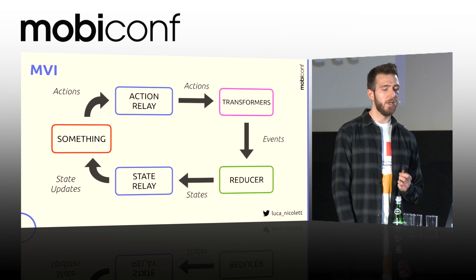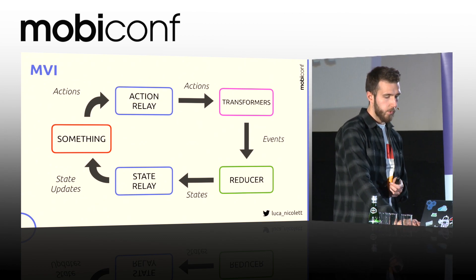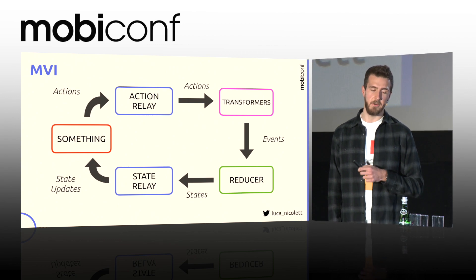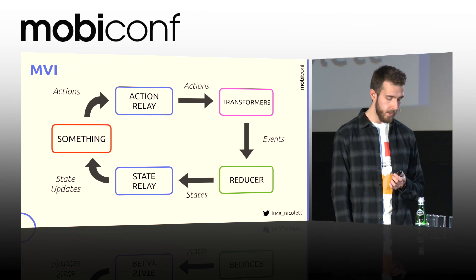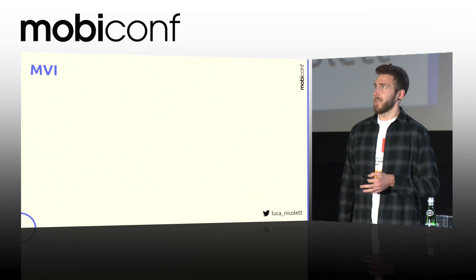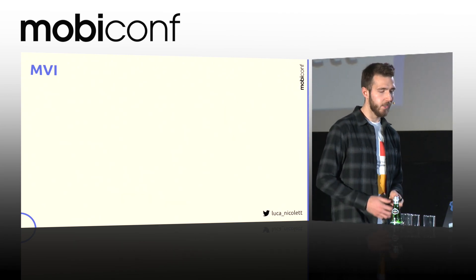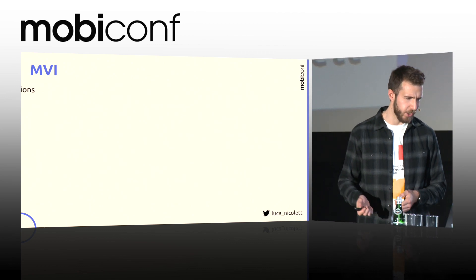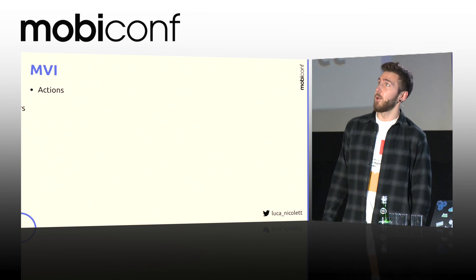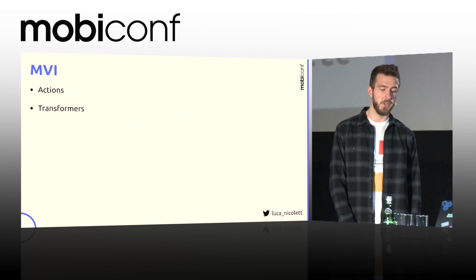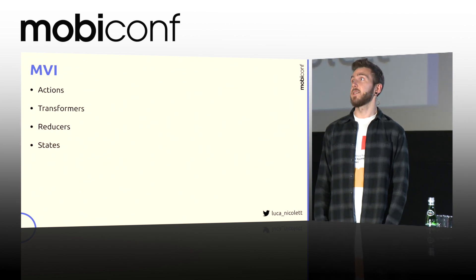We start with an initial state, and then any action which comes in, even lifecycle events, creates new states based on the previous one and the action itself. This is because we wanted our implementation of the MVI architecture to be usable without any UI as a headless system. Every single MVI implementation uses different naming for almost the same components. In our implementation, we use these names: we have actions, which are generated by the user or from the system; transformers, which apply the business logic; reducers, which generate new states; and the states themselves.